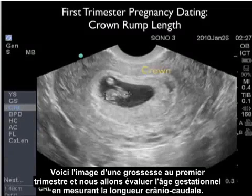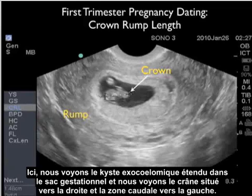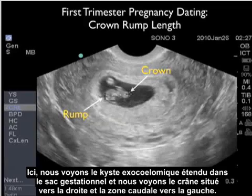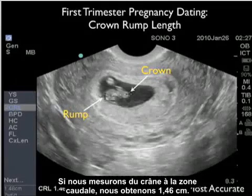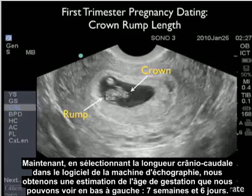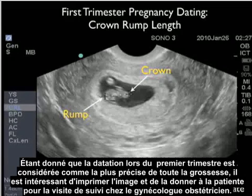This is an image of a first trimester pregnancy, and we're going to evaluate the gestational age by measuring the crown rump length. Here we see the fetal pole stretched across the gestational sac, with the crown located towards the right and the rump towards the left. Placing the calipers from crown across to the rump gives a measurement of 1.46 centimeters. By selecting crown rump length in the software package on the ultrasound machine, we get an assessment of gestational age — 7 weeks and 6 days. As first trimester dating is considered one of the most accurate during the entire pregnancy, it's nice to print this image out and give to your patient for their follow-up visit with their OBGYN.